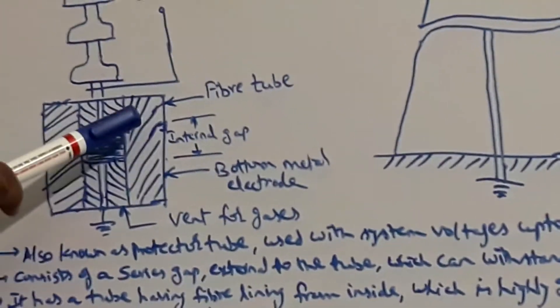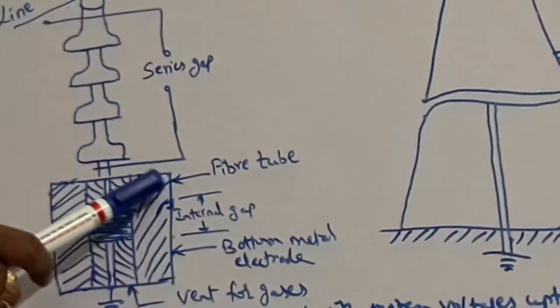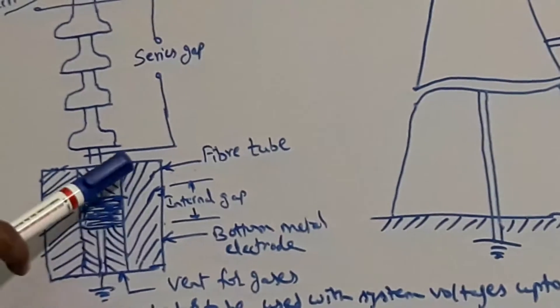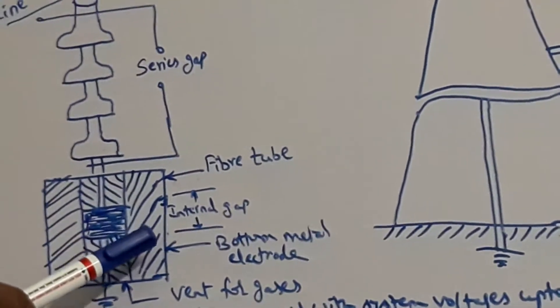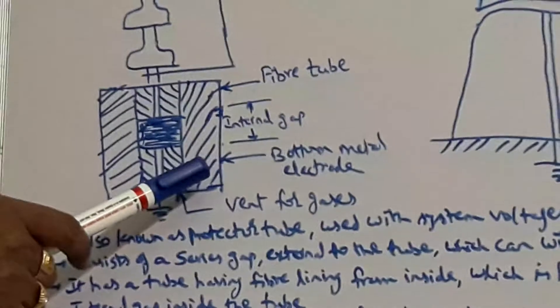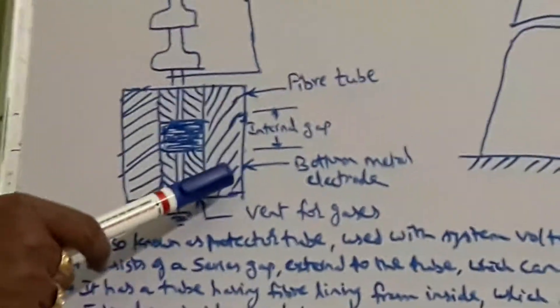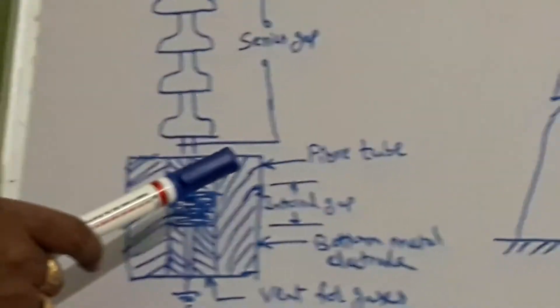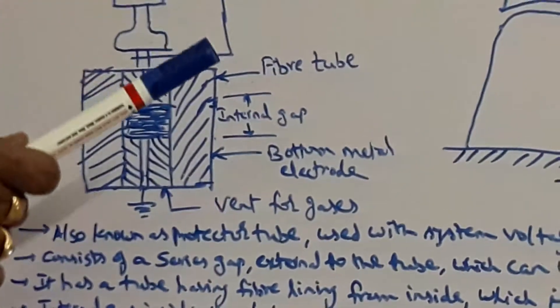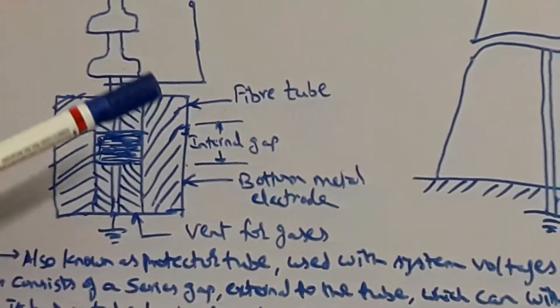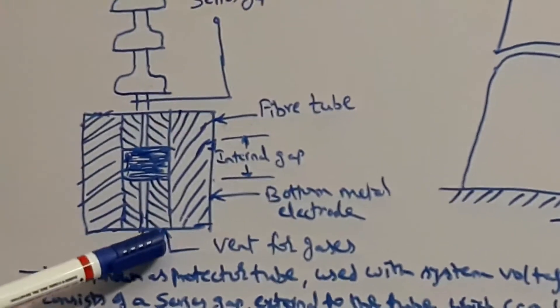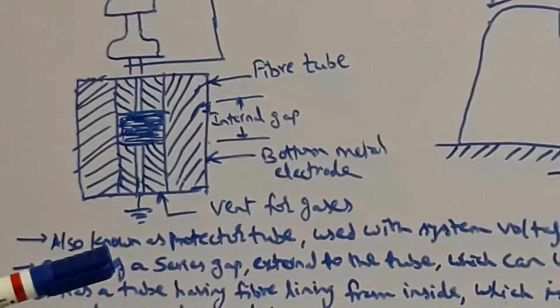The fiber tube consists of fiber lining which is made of highly gas-evolving material. The tube has an internal gap and also an open vent for the gases to escape.